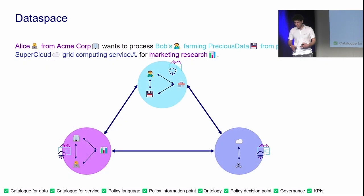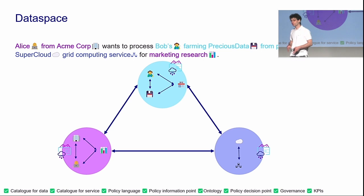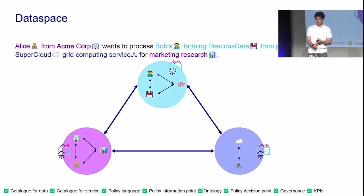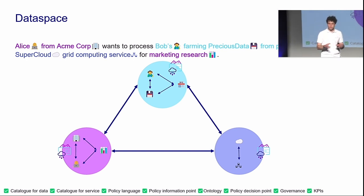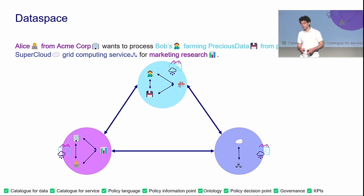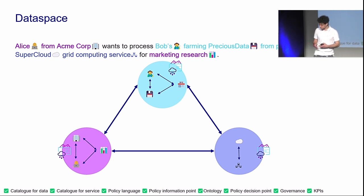Now we have everything. Back to our original scenario: Alice from Acme wants to process Bob's farming data from provider Eve on Super Cloud grid computing services for marketing research. We have a way to search — catalog, services, data, a policy language. We have information and decision points with no centralized ownership of all information. No lock-in, no lock-out. Based on existing standards — cheap, reliable, scalable. We have an ontology we continue to extend, governance, and a means to measure what's happening.